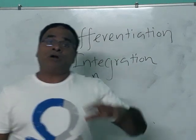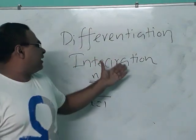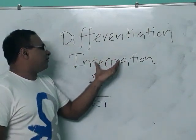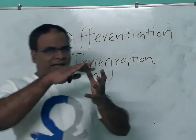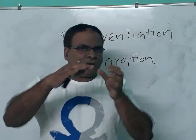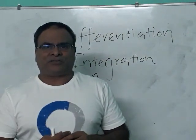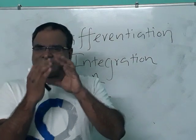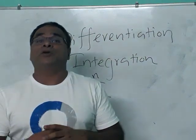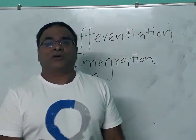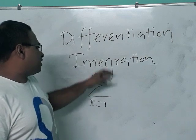There are infinite numbers between 1 and 2, and all those things are included in the case of integration. That is a more precise and accurate process for summation — that is integration. Differentiation is the reverse process.